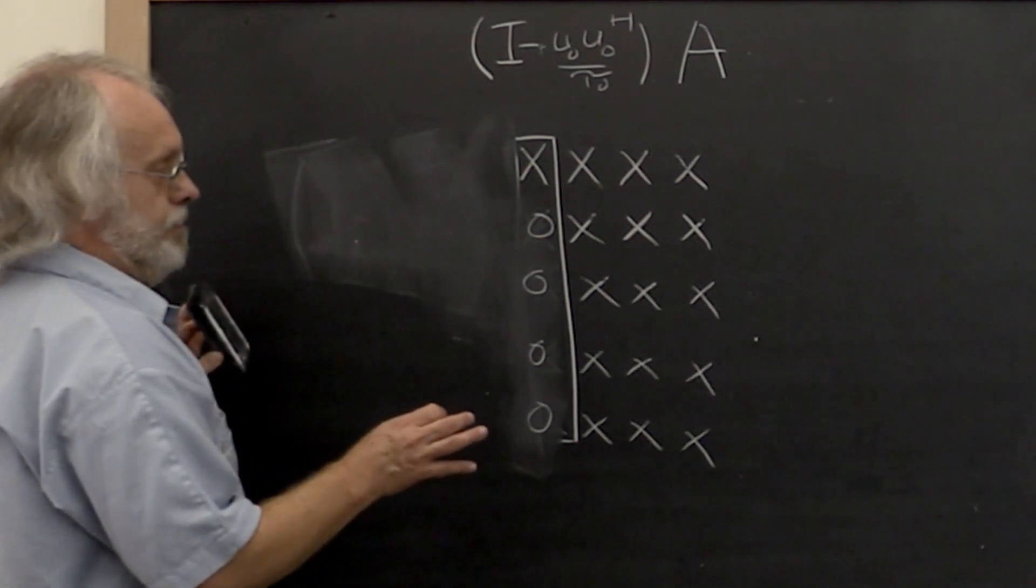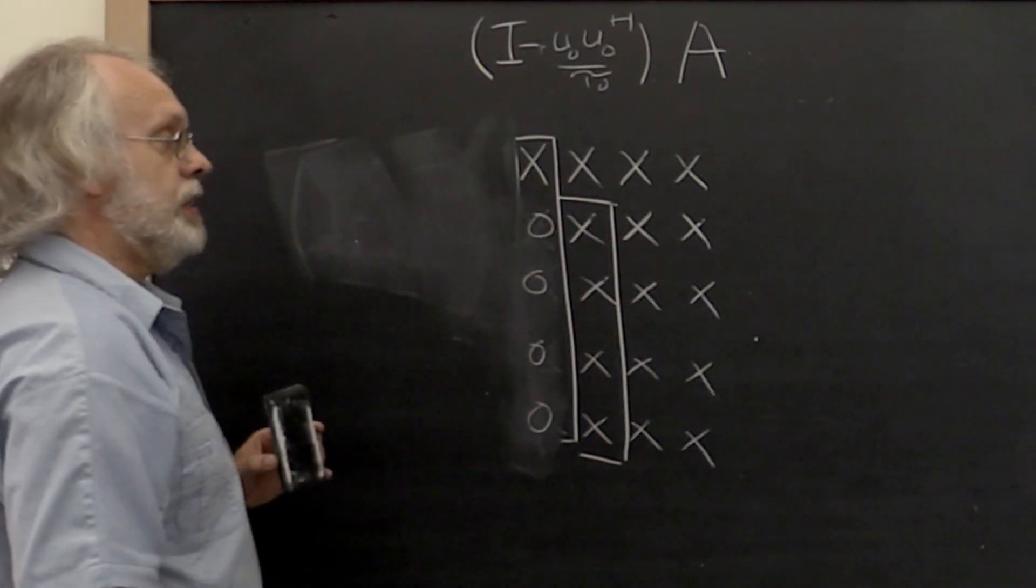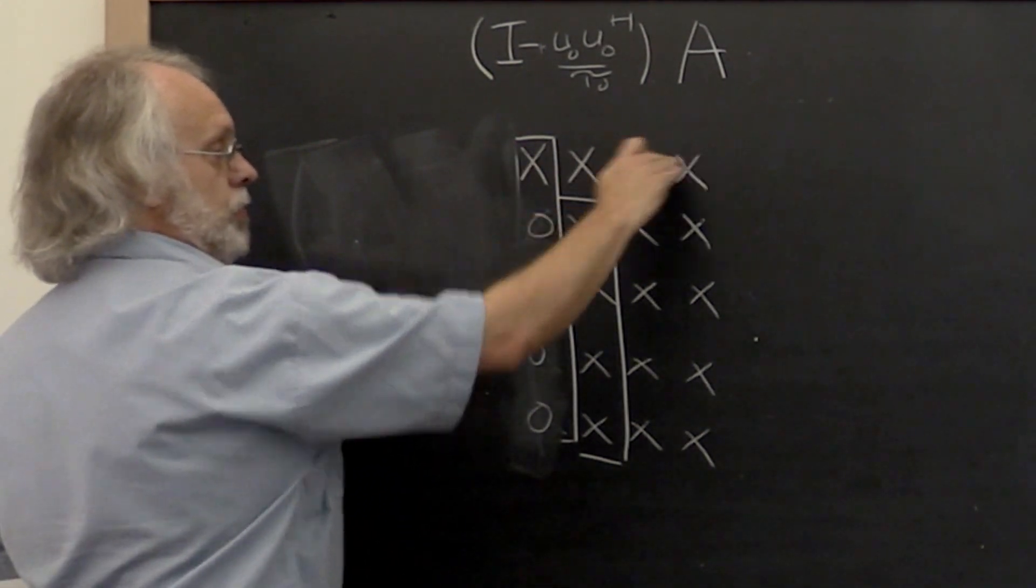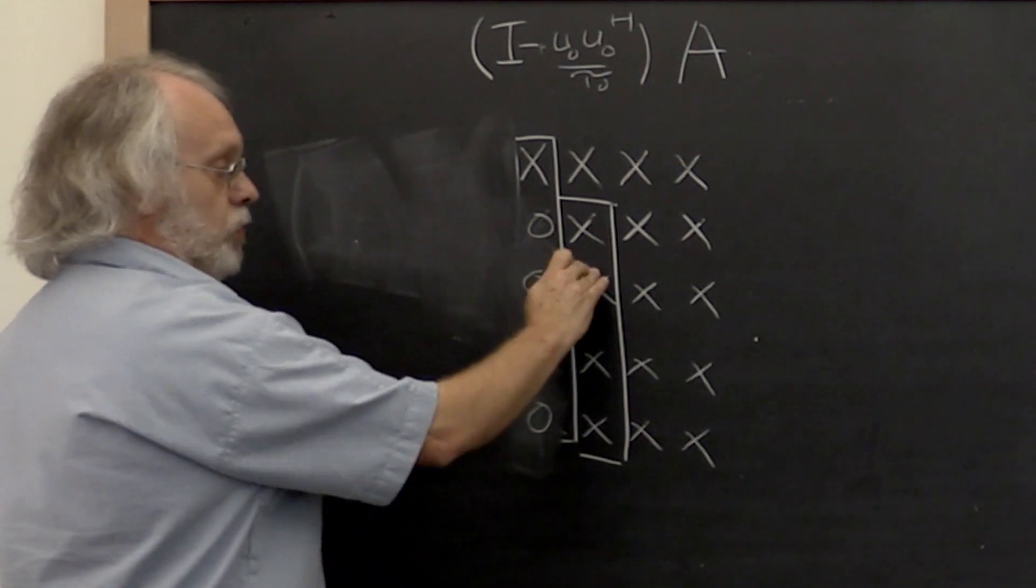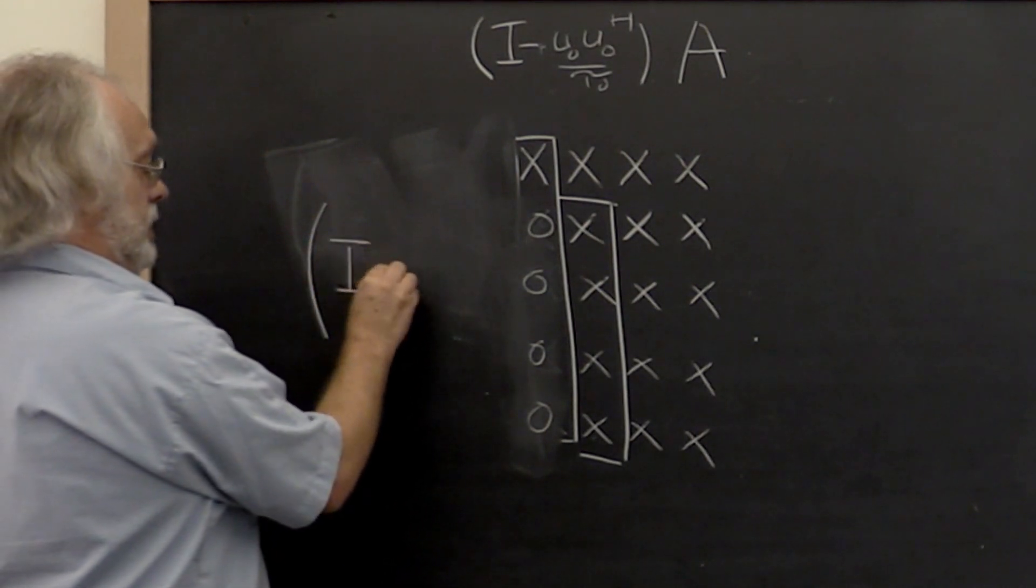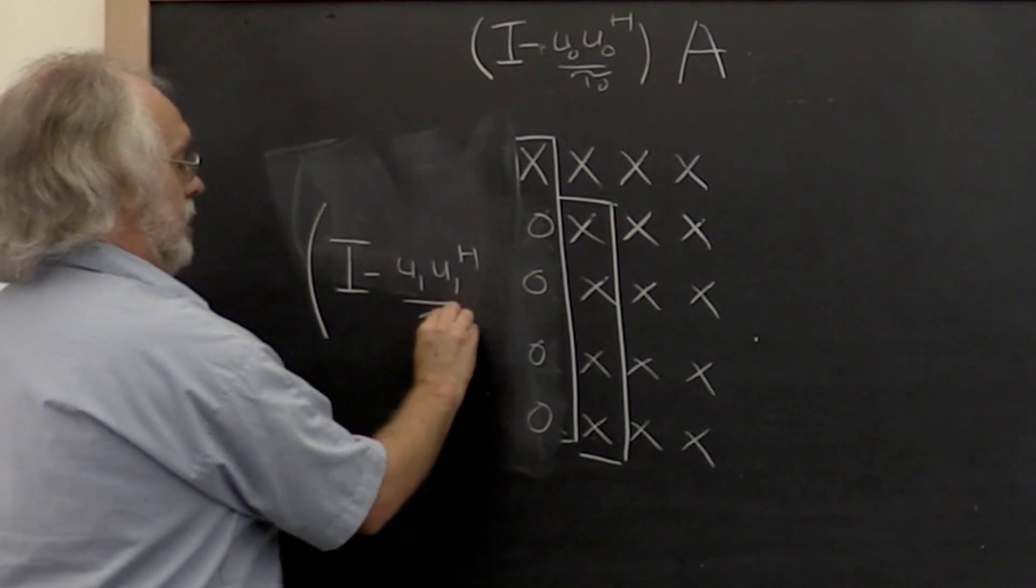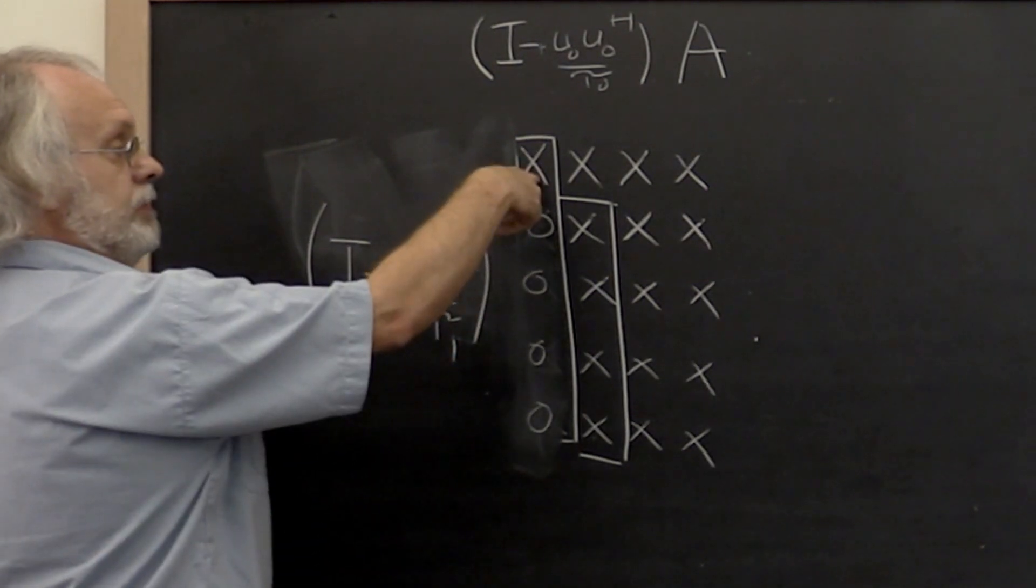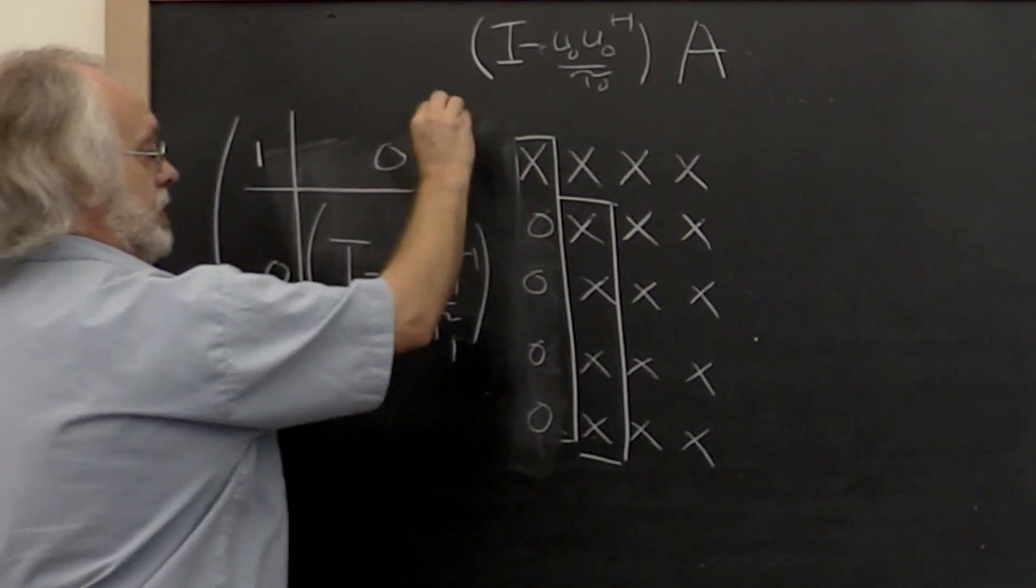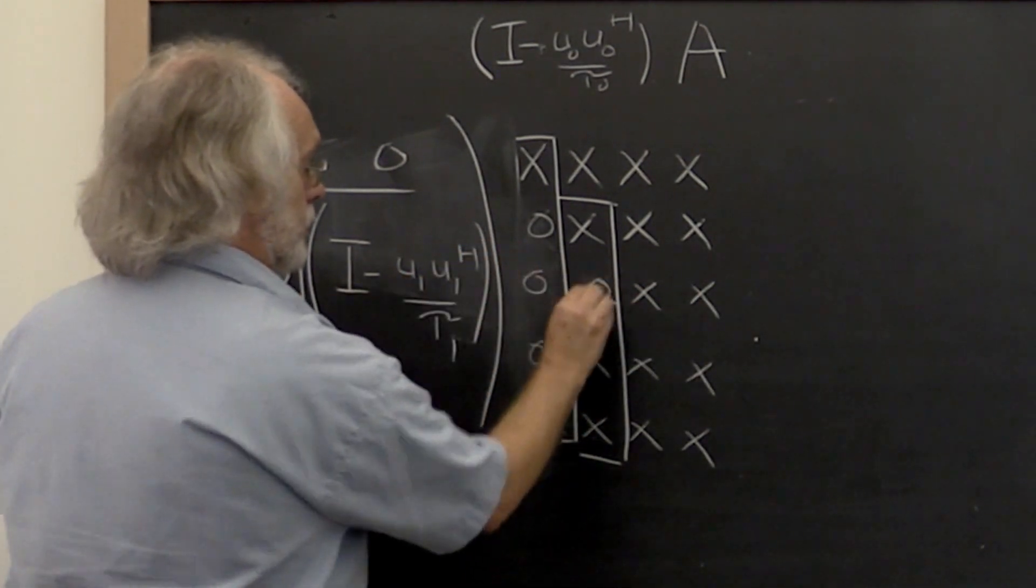Then we say, okay, if we now compute a Householder transformation from this vector and we leave the first row alone, then we can introduce zeros right here. Well, the Householder transformation would look something like this. But we want to leave the first row alone so we could create a matrix that looks like that, such that if you apply it to this matrix it now introduces zeros right here.